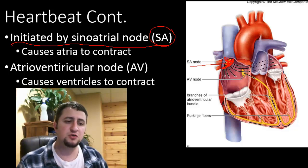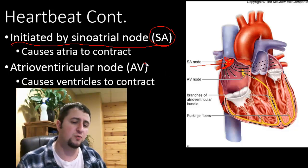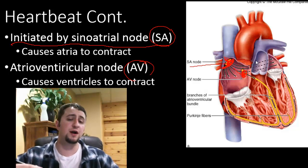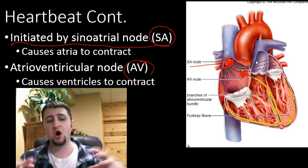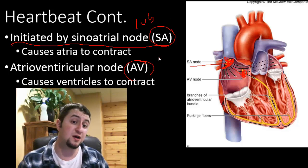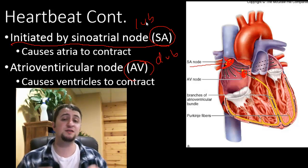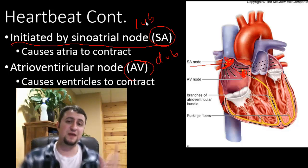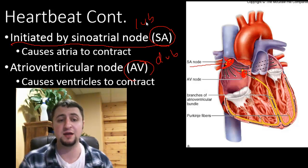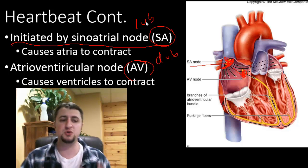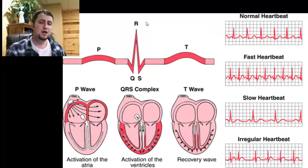After the atria contract, the signal is sent over to the atrioventricular node, also referred to as the AV node, which is right here. As soon as the signal is strong enough, it causes the ventricles to contract, which also makes that lub-dub sound. The lub sound is caused by the atria contracting, and the dub is caused by the ventricles contracting. So the first thing that contracts is initiated by the sinoatrial node, and the next thing is the atrioventricular node.